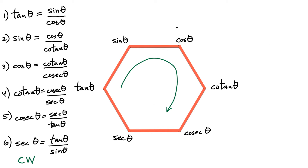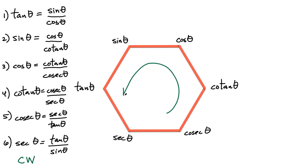We have six relationships from just this simple hexagon — going around in a clockwise fashion. What happens now if instead of going clockwise, we go around in the counterclockwise direction? Let's start over here again at tangent. Tangent of theta equals secant of the angle theta divided by cosecant.